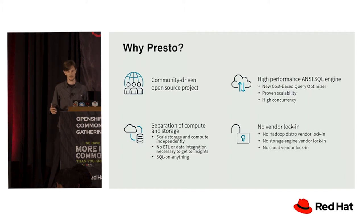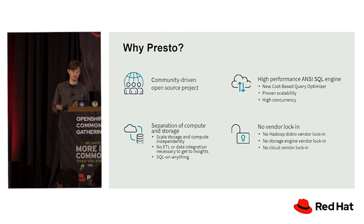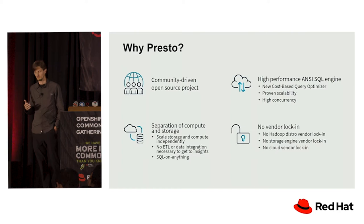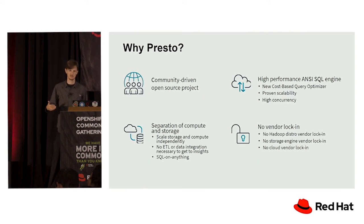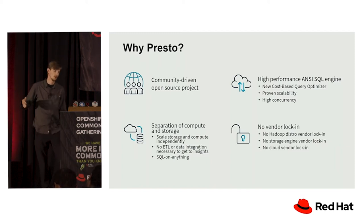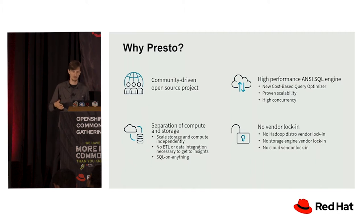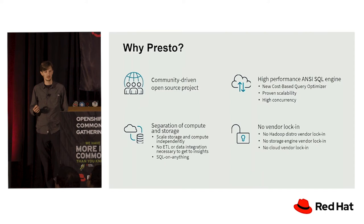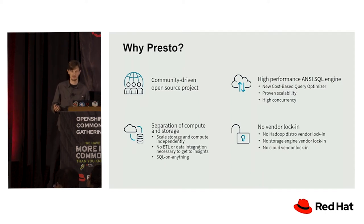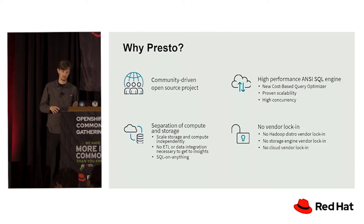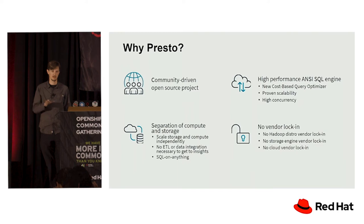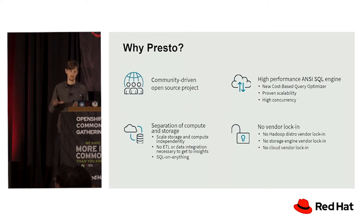Companies like Airbnb, Netflix, Lyft, LinkedIn, and many many others are part of the community driving this forward, making sure the product survives despite any changes from a single individual company. It's a very powerful, high-performance SQL engine proven at scale. The largest deployments of Presto are approaching about 1,000 machines in a single cluster, and many companies are running many clusters because since it's compute-only, it's very easy to spin them up and down.